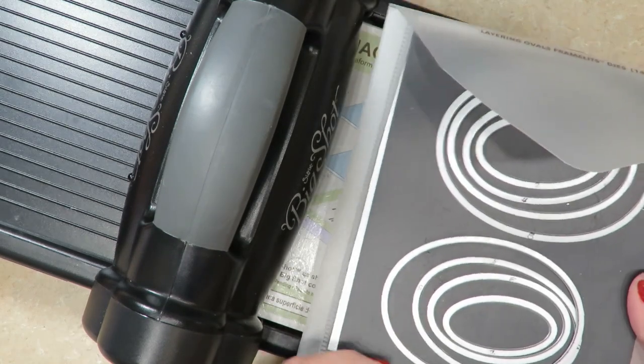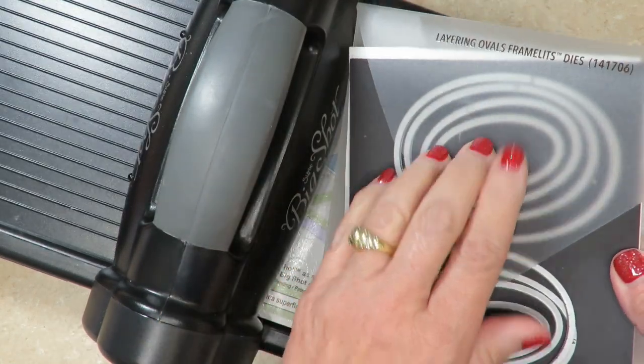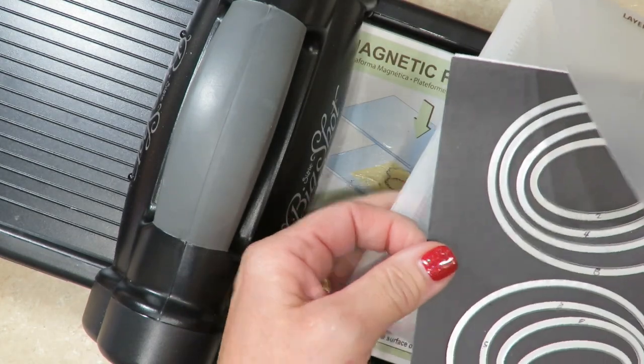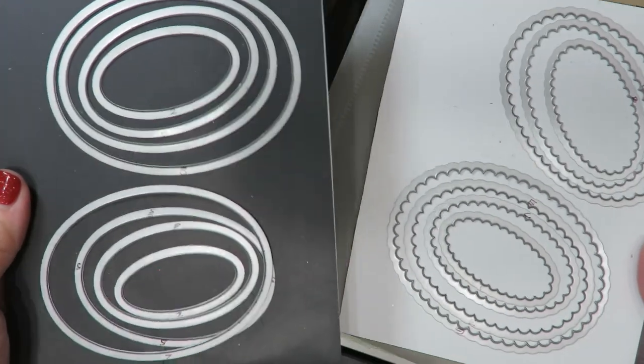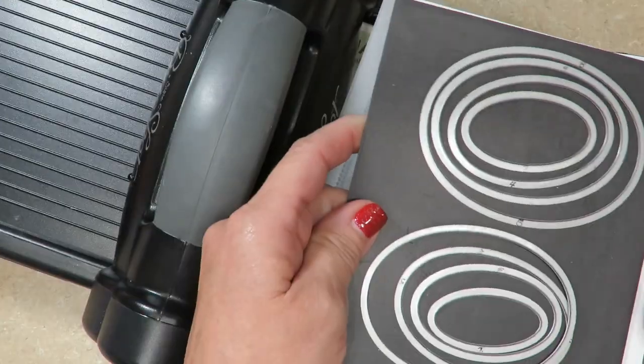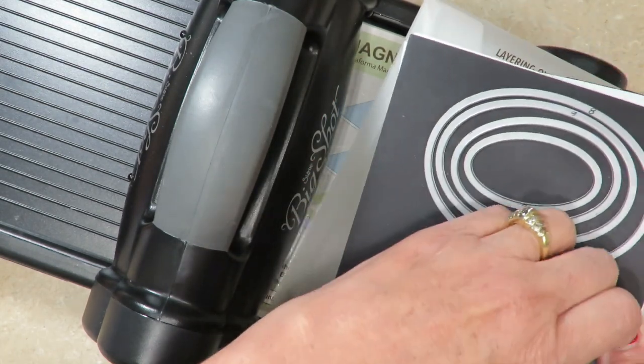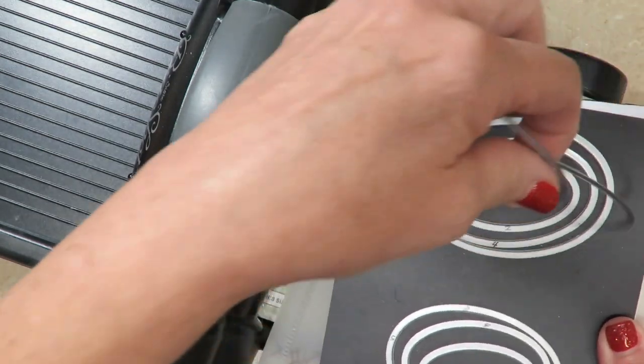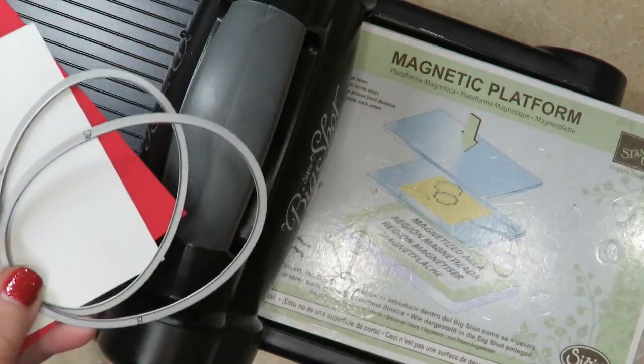The next step is going to be some die cutting and I'm using the layering ovals framelits. I really love these not just because there are cascading sizes but also because they come with scallop ovals as well. Makes them really great to create cards and layers easily. I'm choosing the two largest dies that are inside the framelits.